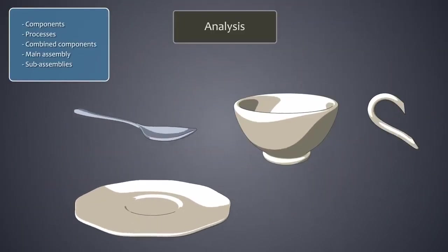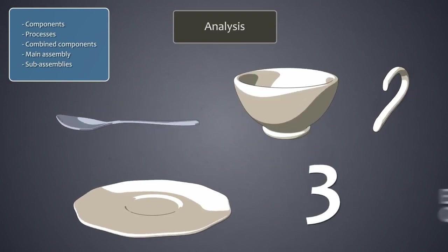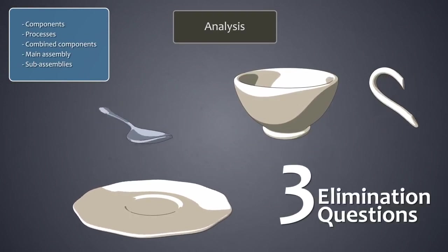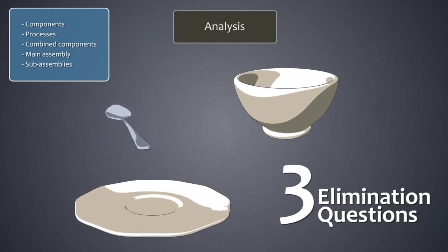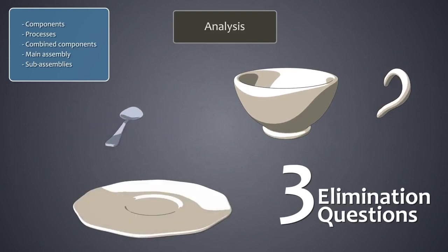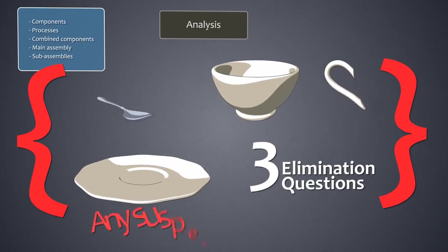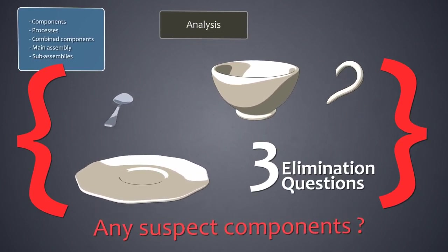Individual components in the assembly diagram are evaluated by means of three elimination questions. The answers to these questions help determine whether the component can be eliminated without the loss of functionality through integration with other components. Components that could lose their right to exist in their current form are referred to as suspect components.